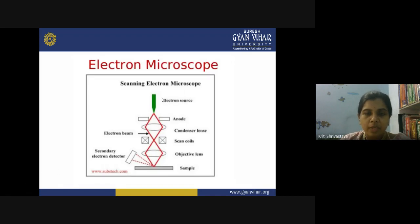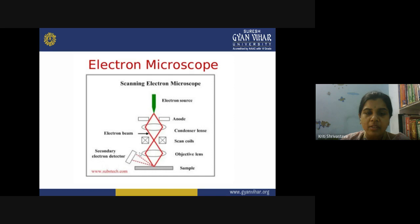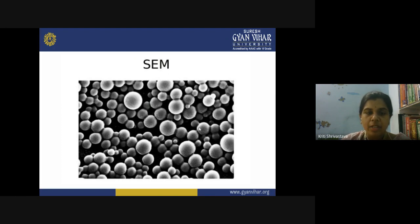This is the electron microscope with the source of electrons, anode, condenser lens, scan coils, objective lens, and sample. This is an optical property of the colloidal system. A secondary electron detector is also present. This electron beam travels fast and identifies your object placed at the sample table. You can see the particles in the image — even at the nanoscale level, the electron microscope can resolve different particles.